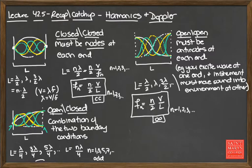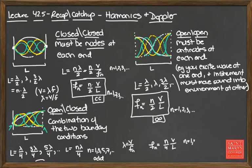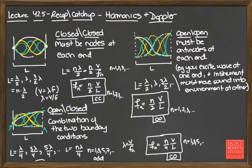Using the relationship lambda = v/f, we can rearrange to get for a closed-open system: F_n = nv/(4L), where n is restricted to odd numbers — 1, 3, 5. So there is no second harmonic for open-closed systems; you can only have the first, third, fifth harmonic, etc. This results in different instruments being able to sound different, even if they're playing the same fundamental note.